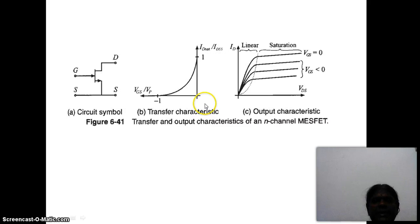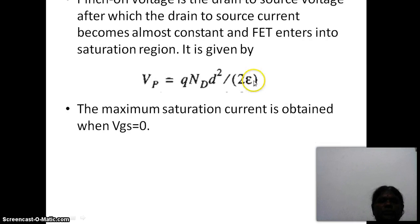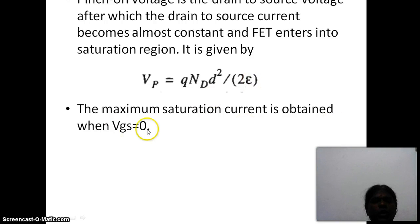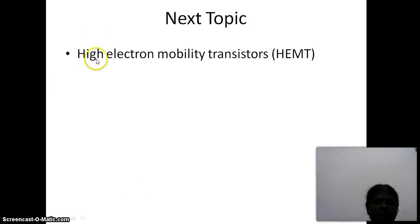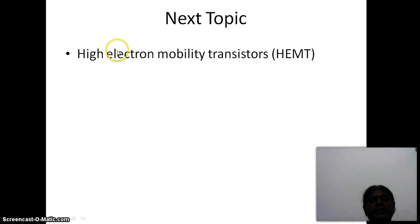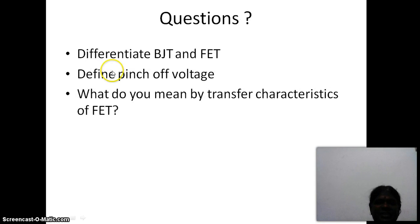As seen previously, the pinch-off voltage is the voltage at which the drain current becomes saturated. The maximum saturation current occurs when VGS equals 0, as inferred from the graph. With this we conclude the topic of field effect transistors. In the forthcoming class, we are going to see about high electron mobility transistors (HEMT).